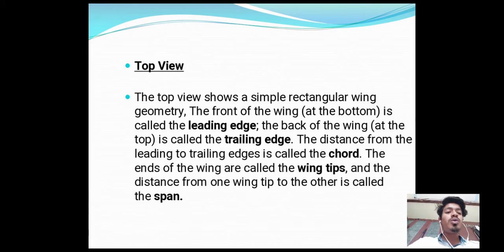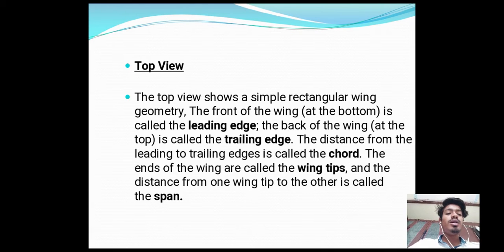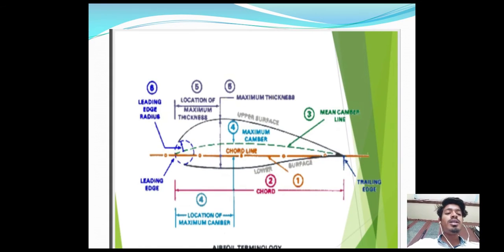The top view shows a simple rectangular wing geometry. The front of the wing is called the leading edge, the back is called the trailing edge, and the distance from the leading edge to the trailing edge is called the chord. The ends are called wing tips, and the distance from one wing tip to the other is the span. Additional labels include leading edge, trailing edge, chord line, mean camber line, and upper and lower surfaces of the airfoil.